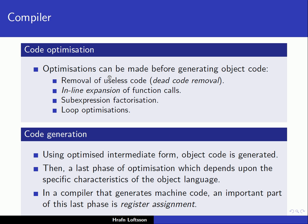Before generating the object code, we might do some optimizations on the intermediate code. There are various things that can happen when code is generated. For example, there might be some useless code that has been generated — code that will never be executed — and the optimization phase might remove this. We might also want to do inline expansion of function calls, which means that instead of calling a function, we put the code of the function at the place where it was called, because calling a function involves separate activation records placed on the runtime stack.